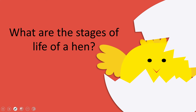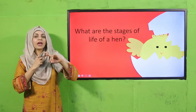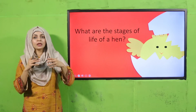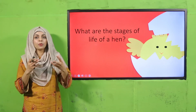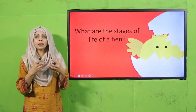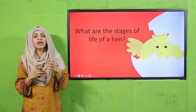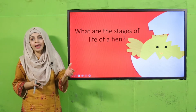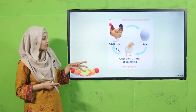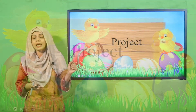The hen hatches from an egg, then the chick comes out and starts growing — body parts develop, feathers grow. In 90 days it is fully developed into an adult or mature hen that is fully capable of laying eggs. These are the life stages of a hen.